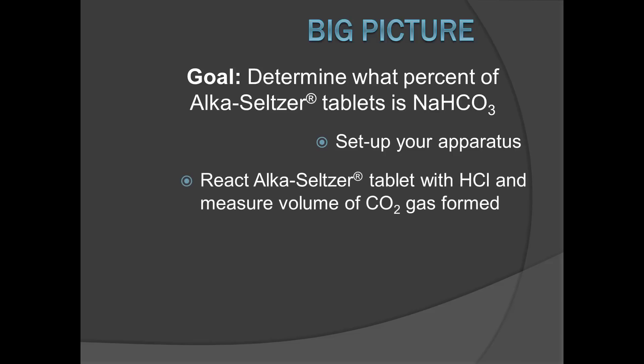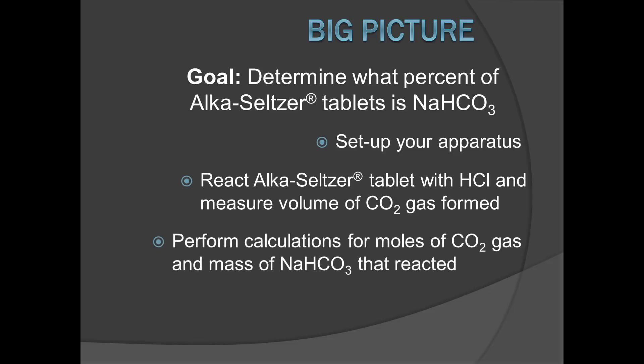Then you'll get to perform the same reaction that takes place in your body between Alka-Seltzer tablets and stomach acid. You'll react the tablet with HCl and by using your apparatus you'll be able to measure the volume of CO2 gas that is formed. From this volume you'll then perform calculations using the ideal gas law to determine the moles of CO2 gas that formed, and then you'll use Alka-Seltzer reaction stoichiometry to calculate the mass of sodium bicarbonate that reacted.